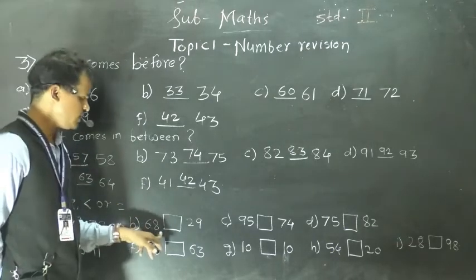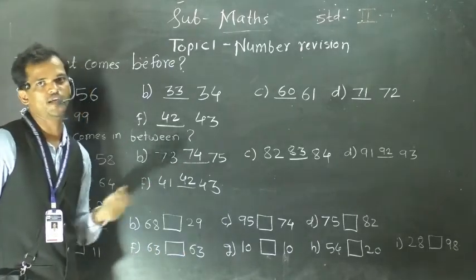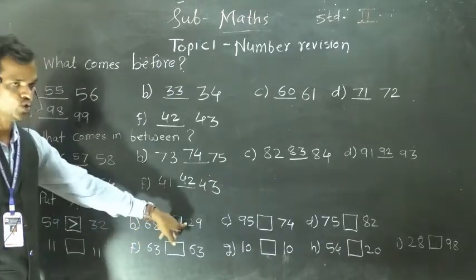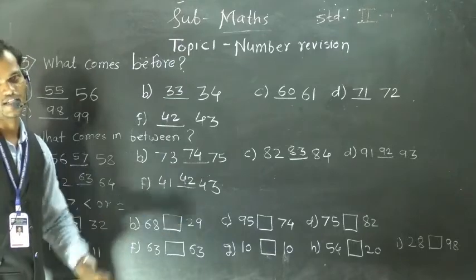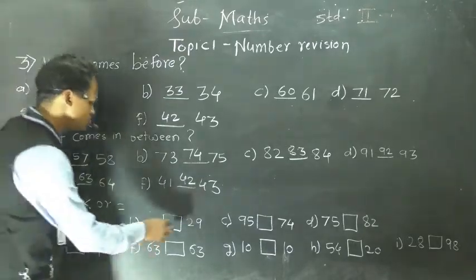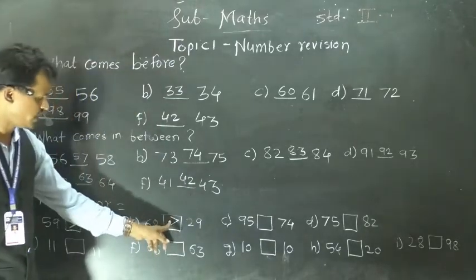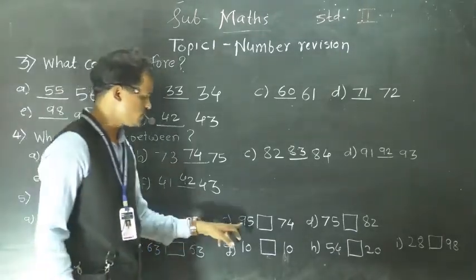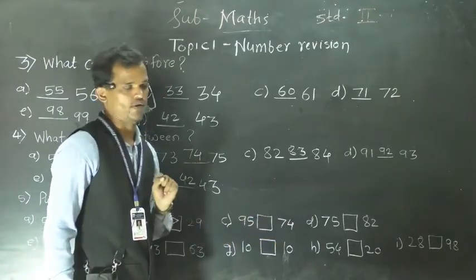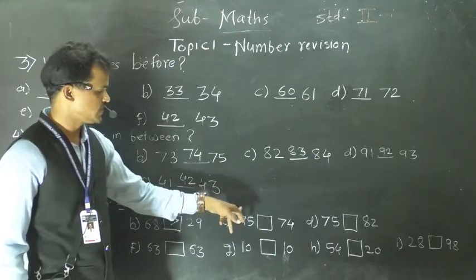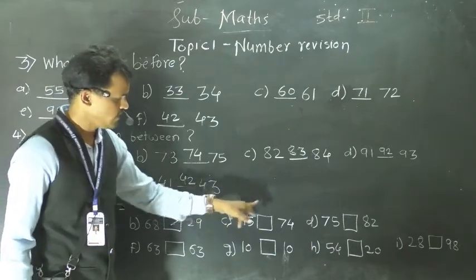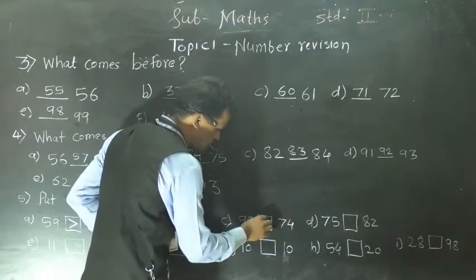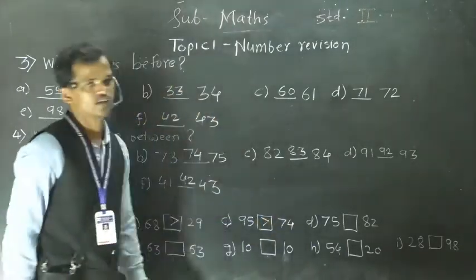Next: 68 and 29. Compare the tens place digit: here 6, here 2. So 6 is greater than 2, so 68 is greater than 29. Use this sign — means the open side of this sign should be at the greater number. Then next number: 95 and 74. Here compare tens place digit first: 9 and 7. 9 is greater than 7, so this number is greater than this number. So 95 is greater than 74.